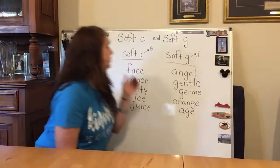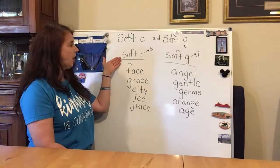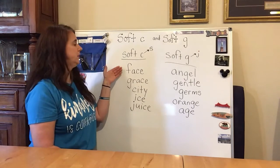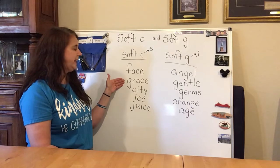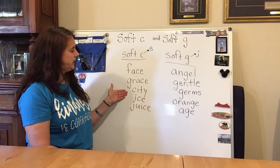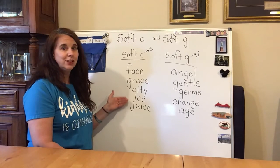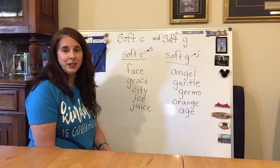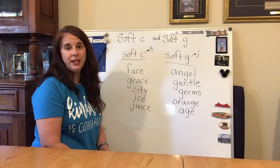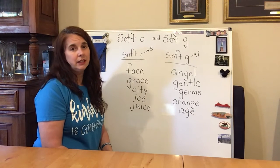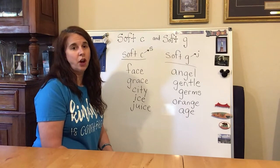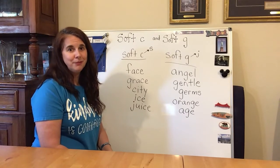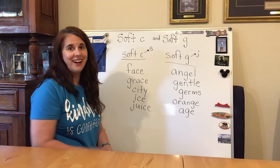And remember, we have our soft C that makes the S sound: face, race, city, ice, juice. So those are the differences between the soft C and the soft G sounds. I hope that helps you. Bye!